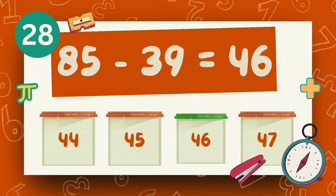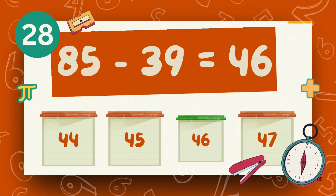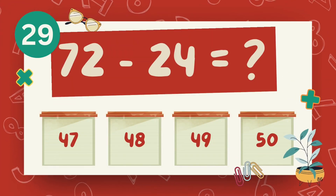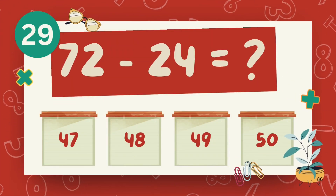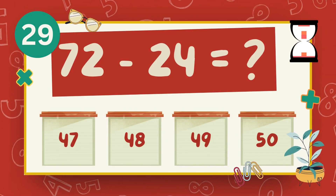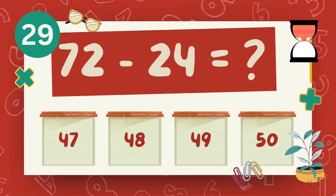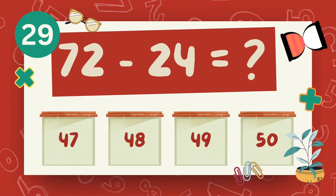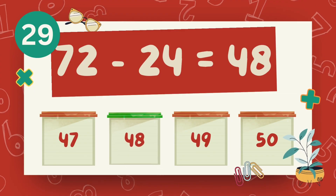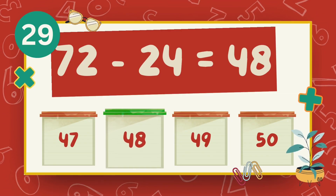The answer is forty-six. What is seventy-two minus twenty-four? The answer is forty-eight.